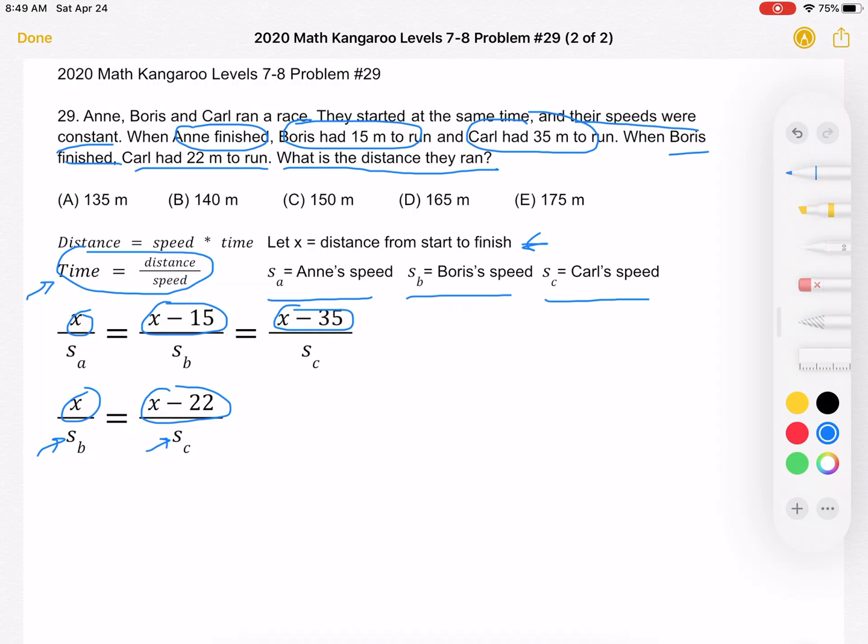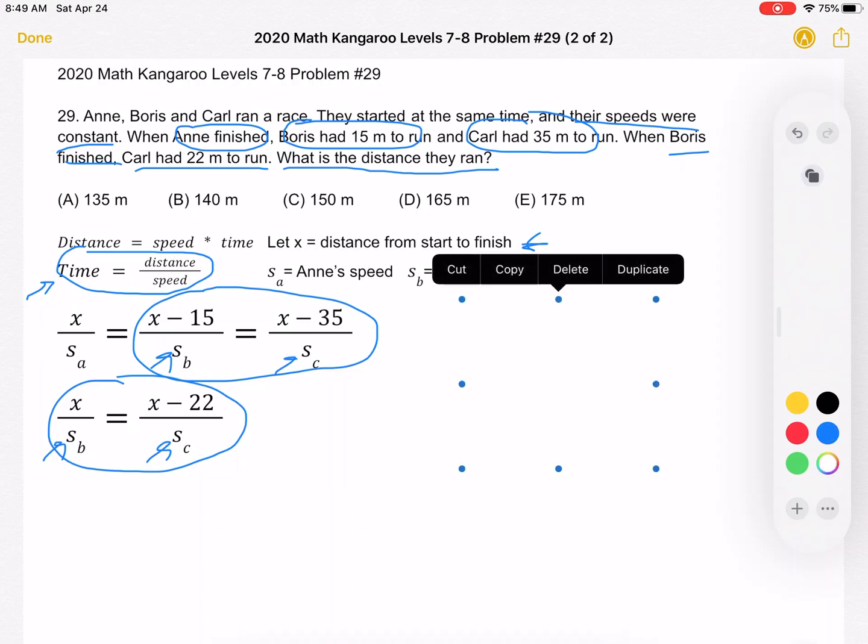So now we can solve for x. How might we do that? Well, one way we can do that is by looking at these two equations. Because we have this s sub b, s sub c, s sub b, s sub c. So one way we can do this is by rewriting this equation in order to isolate s sub c over s sub b. And then we can do the same with the second equation and set the x parts equal to each other.